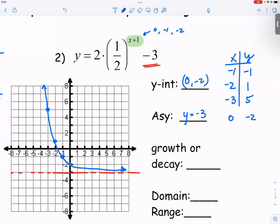Asymptote is Y goes to negative three. It's also a decay because it's going down. And the domain, it's all real numbers. So from negative infinity to infinity. And the range, it's from negative three going all the way up.